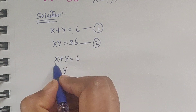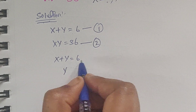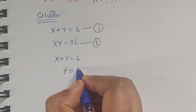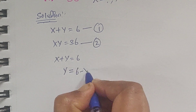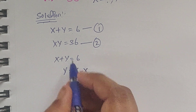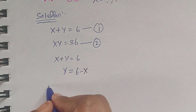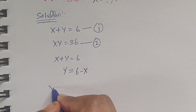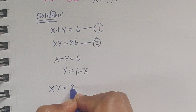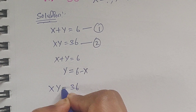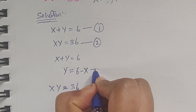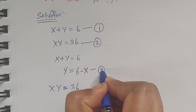Just move x to the right side, so y will become 6 minus x. So x times y equals 36. Let us consider this is equation 3.